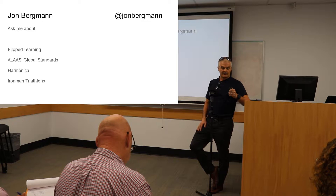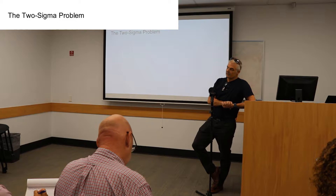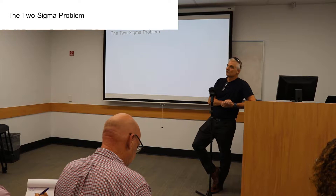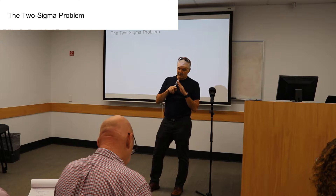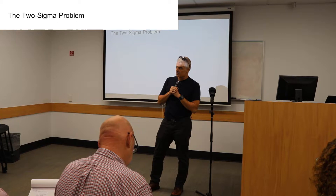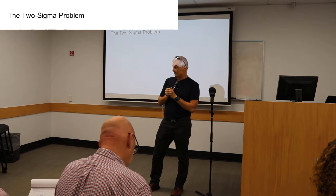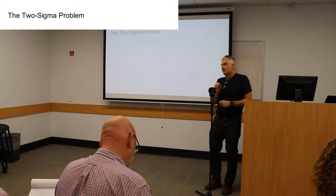The topic I want to talk about briefly is a paper written in 1984 by Benjamin Bloom called 'The Two Sigma Problem.' The issue he was addressing — the challenge he posed to the world — was what he called the two sigma problem. In his research, Bloom realized that if you institute mastery learning, you get a one sigma, or one standard deviation, improvement in student achievement. But if you want a two sigma improvement, that requires one-to-one tutoring.